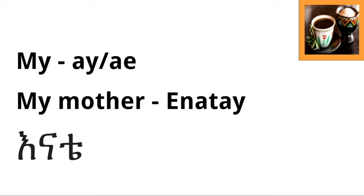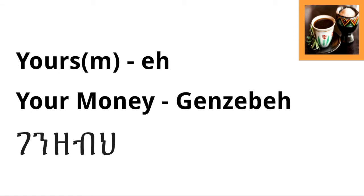There's a one-to-one mapping for the possessive endings and each of the pronouns. For the first person the ending is '-a,' as in 'enate.' Next, for the second person male, the ending is '-eh.' So for example, 'your money' — money in Amharic is 'gunzeb' — becomes 'gunzebeh' when speaking to a male.